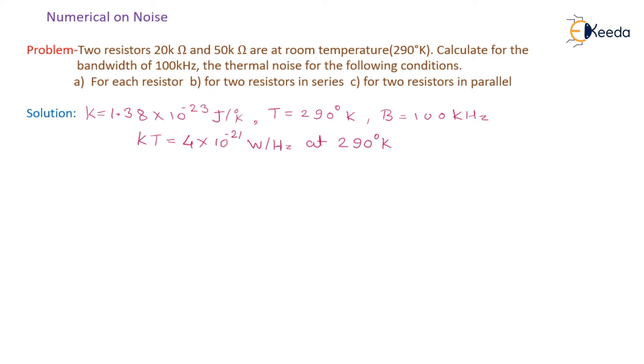Now we know the relation and some standard constants. k equals Boltzmann's constant, 1.38 × 10^-23 joules per degree Kelvin. T is the absolute temperature, that is 290 degrees Kelvin. B is the limited effective noise bandwidth equal to 100 kHz. Now we will take the product of kT equal to 4 × 10^-21 watts per Hertz at 290 degrees Kelvin.